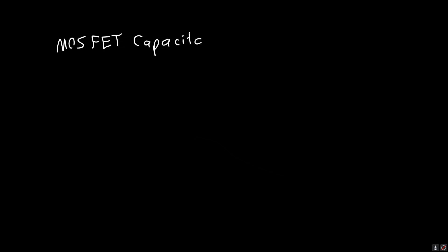In this video, we're going to talk about the MOSFET PN junction capacitances — specifically CSB and CDB, the capacitance between the source and the body, and the capacitance between the drain and the body.